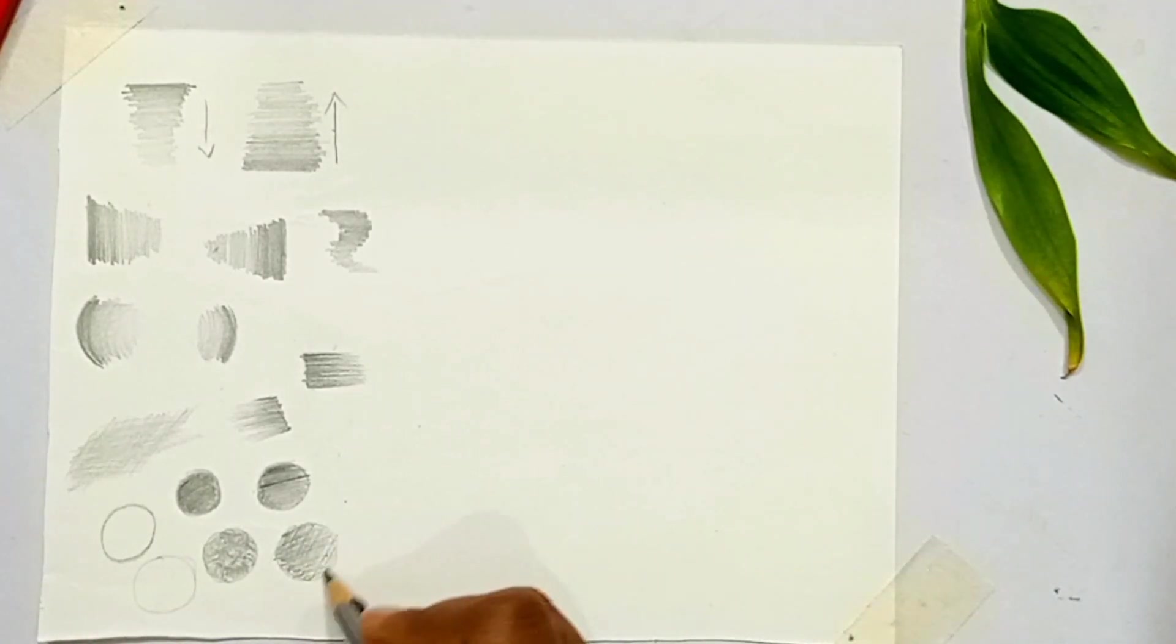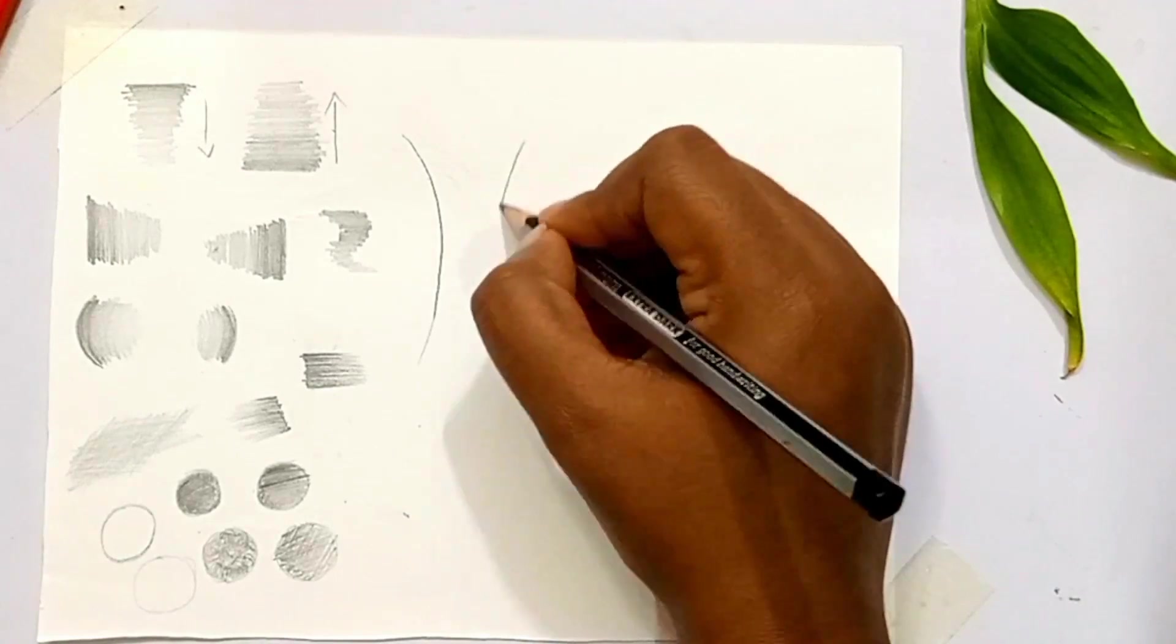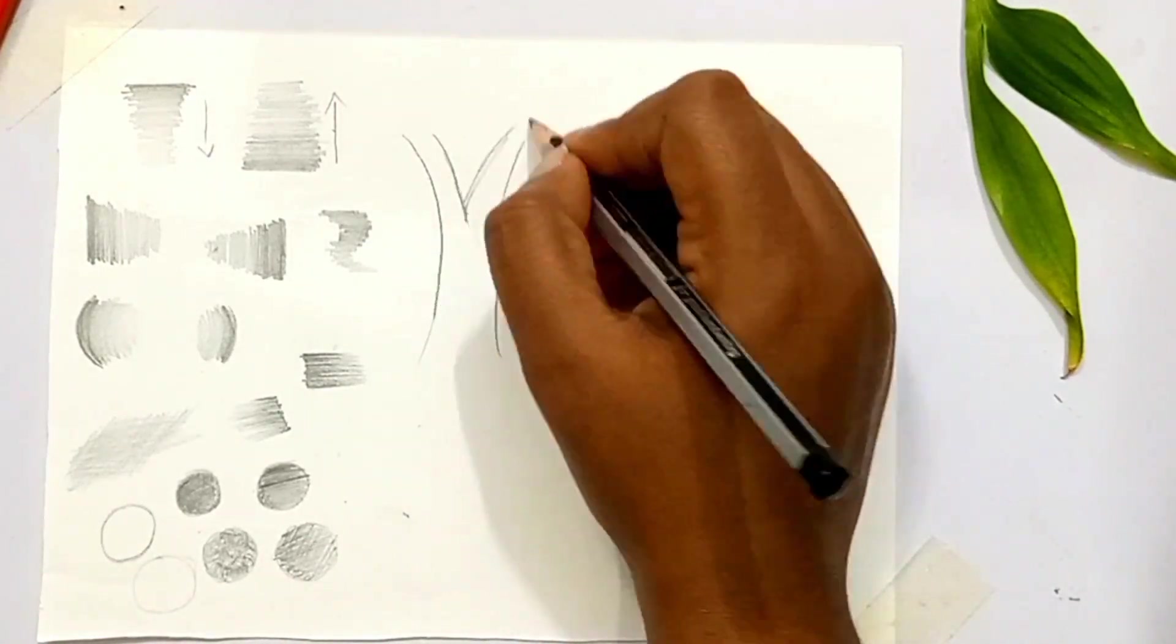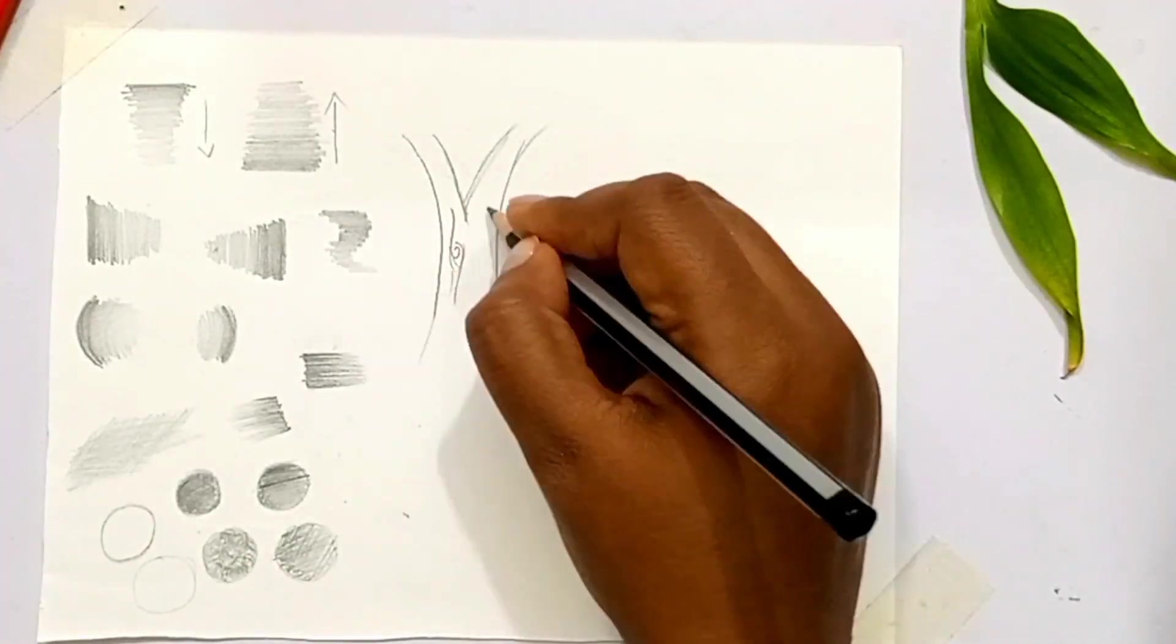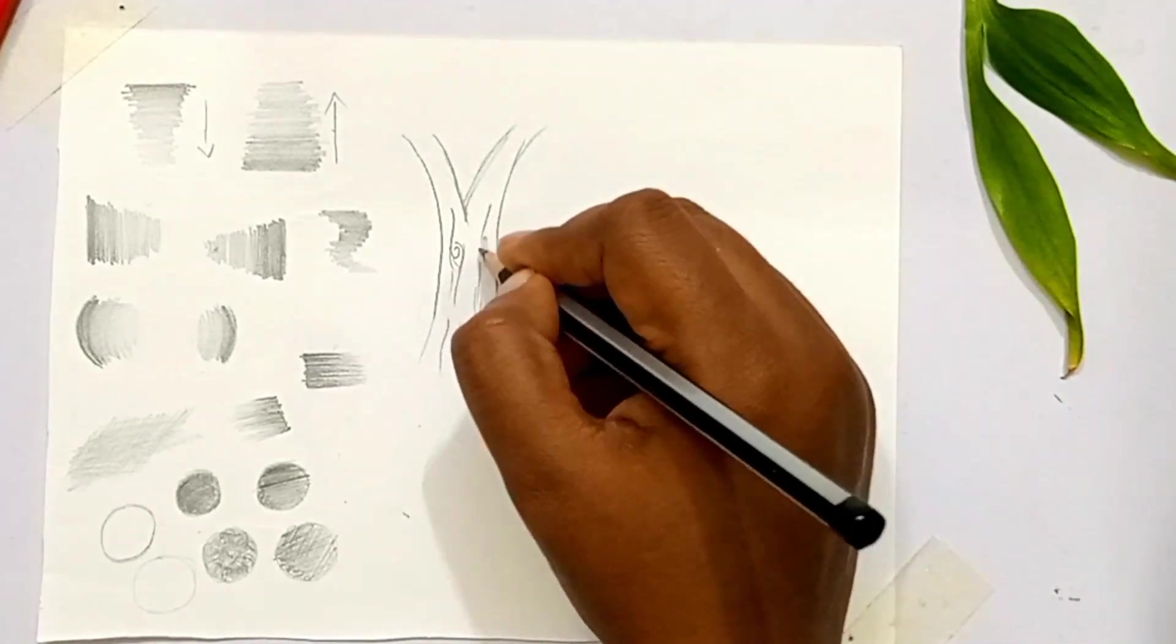For example, I have made a tree. I have drawn some lines to make it look better. Now I will shade it.